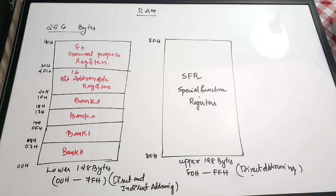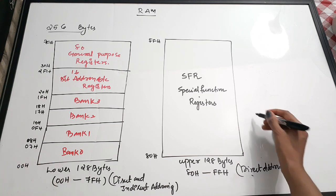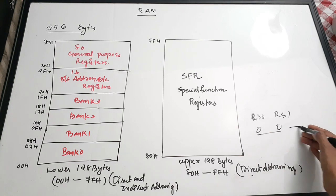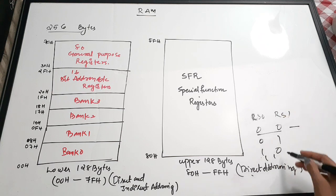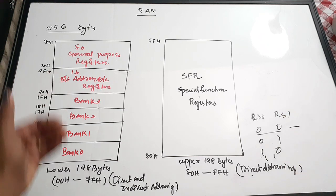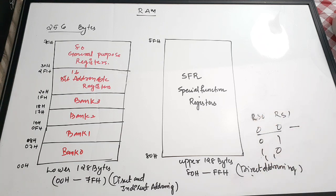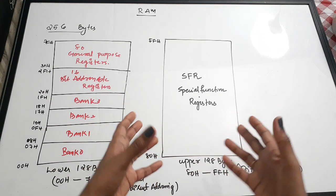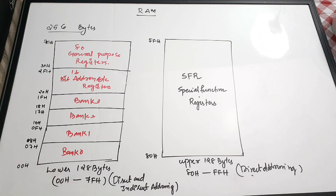To select register banks, the Program Status Word (PSW) register has two bits: RS0 and RS1, which are the third and fourth bits of PSW. RS0 and RS1 are used for selecting the register banks — 00 selects Bank 0, 01 selects Bank 1, 10 selects Bank 2, and 11 selects Bank 3. A separate video discussing the PSW register and register bank selection in detail is available.